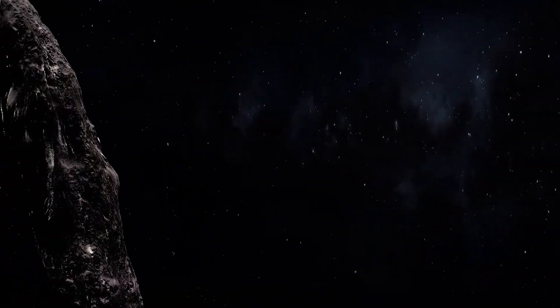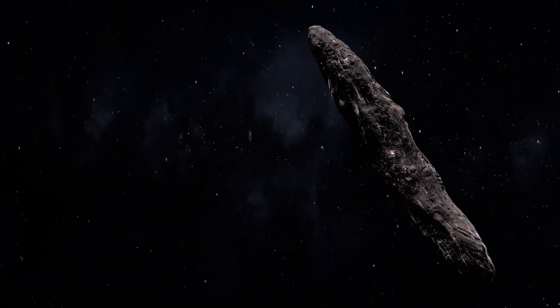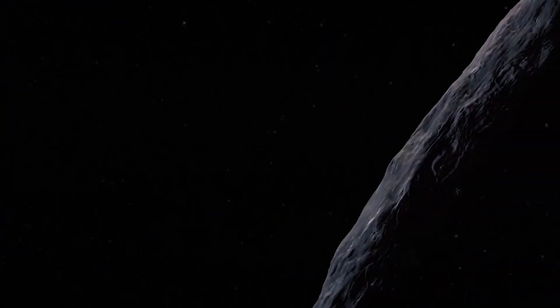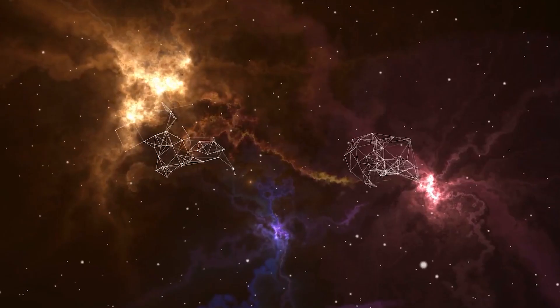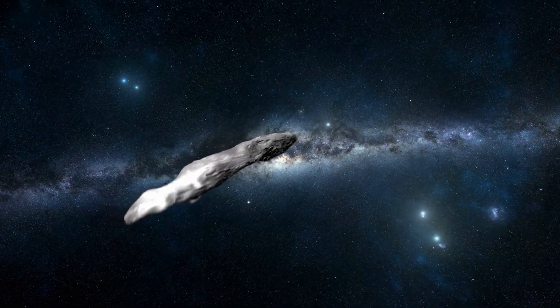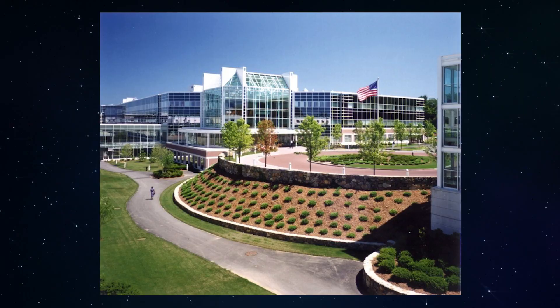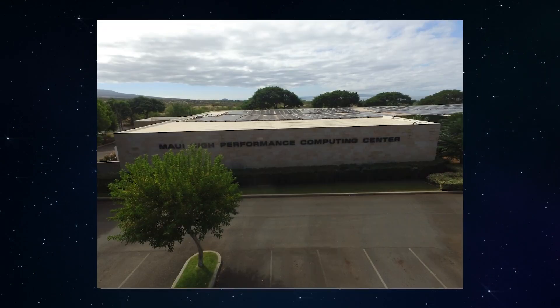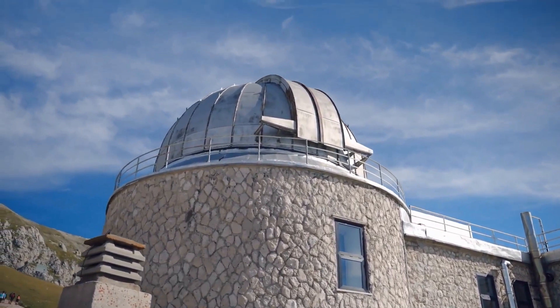The University of Hawaii's Pan-STARRS-1 telescope stands as a remarkable astronomical instrument stationed at the summit of Haleakala on the beautiful island of Maui, Hawaii. With its 1.8-meter diameter, the Pan-STARRS-1 telescope has a role in the ambitious Pan-STARRS project, a collaborative effort involving esteemed institutions such as the University of Hawaii Institute for Astronomy, MIT Lincoln Laboratory, Maui High Performance Computing Center, and Science Applications International Corporation.